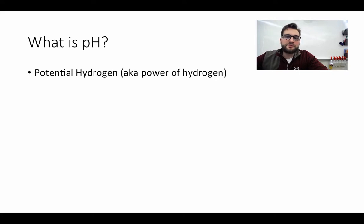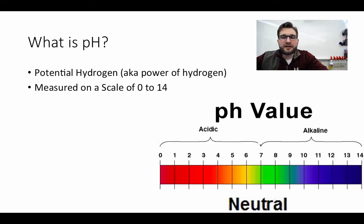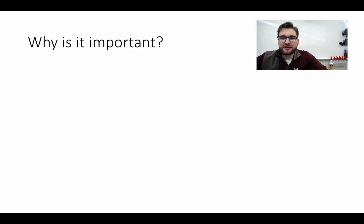First, what is pH? pH stands for potential hydrogen — I've also seen it termed power of hydrogen. It's a measure on a scale of 0 to 14. We can see the scale here: 7 would be neutral. Anything from 7 to 14 would be alkaline, and from 7 down to 0 would be acidic.